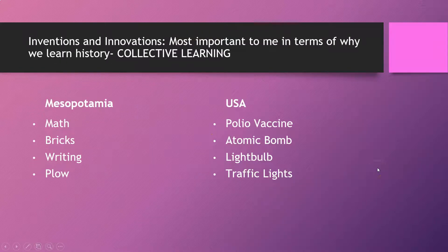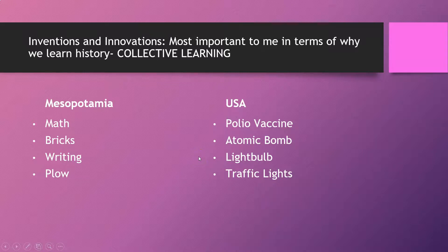The most important and most interesting part is the achievement and innovation of a people. A lot of the stuff I use today was created by these ancient people — they've contributed to the body of human learning, which is called collective learning. Mesopotamia gave us mathematics, mass-produced bricks, the first writing system, and a plow to create more food. America gave the world the polio vaccine, the atomic bomb, the light bulb, and traffic lights. Every group of people has contributed to the body of learning.